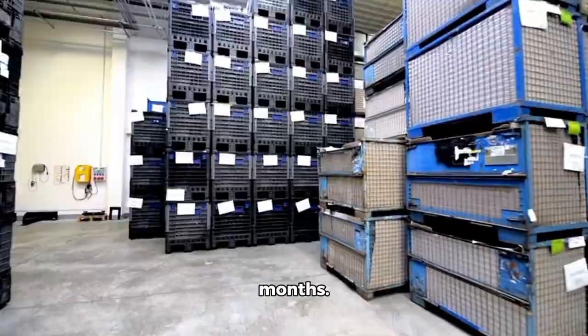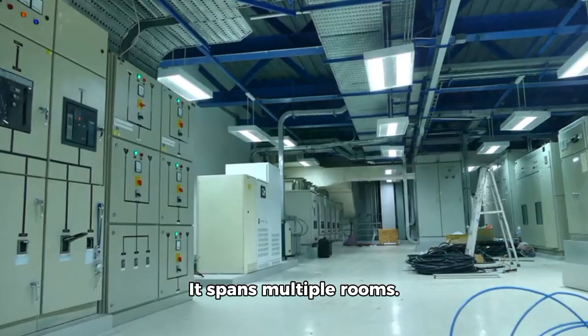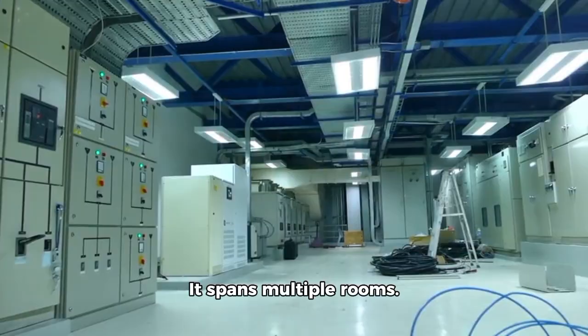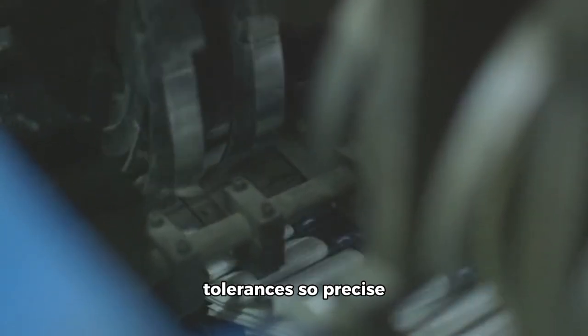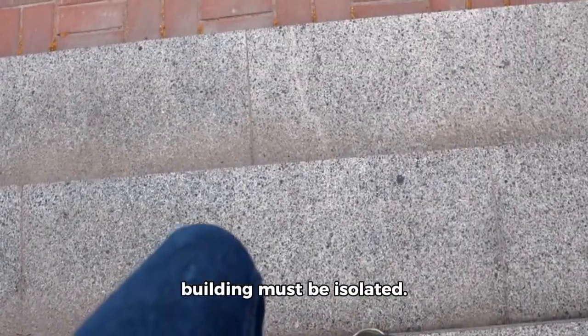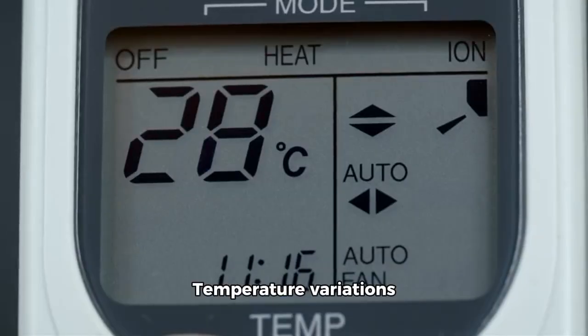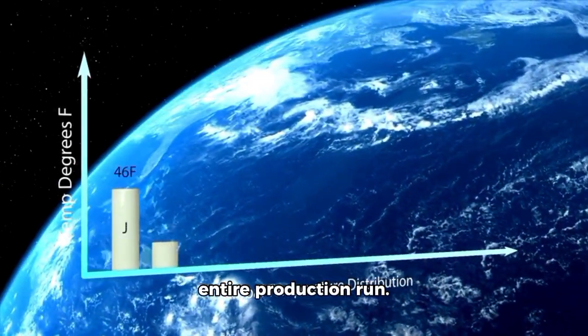The machine itself weighs more than 180 tons. It spans multiple rooms, and it operates at tolerances so precise that vibrations from footsteps outside the building must be isolated. Temperature variations of a fraction of a degree can ruin an entire production run.